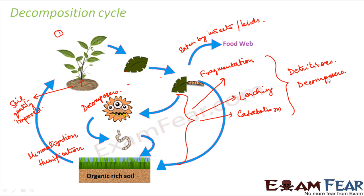We have now covered two important aspects of our ecosystem: productivity and decomposition. Productivity tells us what is being produced, since all living organisms depend on that production. Decomposition tells us what happens when living organisms die — which is important, otherwise the earth would get piled up with dead bodies. Now we will move on to the third aspect of the ecosystem.